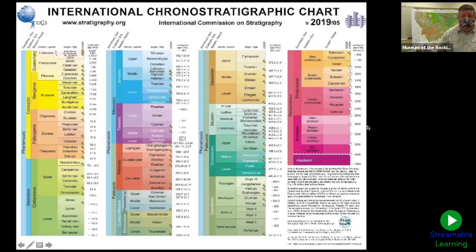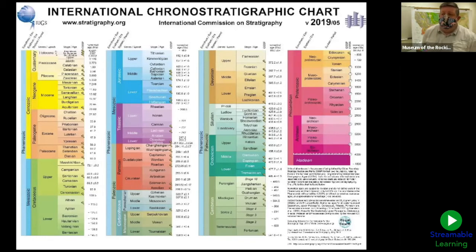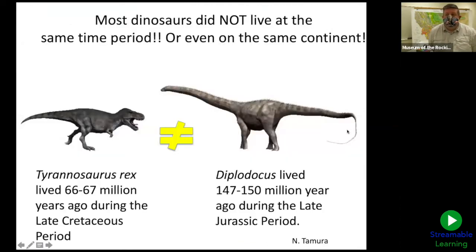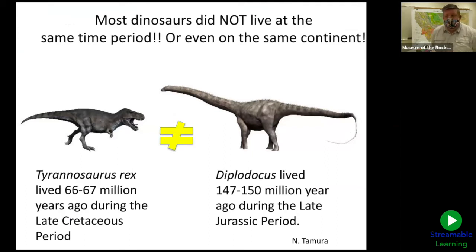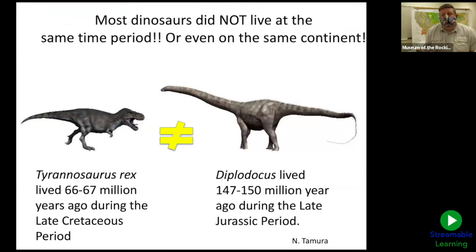That is the geologic time scale — it divides and breaks apart about 4.5 to 4.6 billion years. There are certain fossils and certain dinosaurs only known from certain time periods. For example, a lot of dinosaurs did not live at the same time. Tyrannosaurus rex lived between 66 and 67 million years ago; Diplodocus and its cousins Apatosaurus and Brachiosaurus lived about 147 to 150 million years ago — they never would have met each other. There were different types of dinosaurs living with T-rex and with Diplodocus, but they're from different time periods.